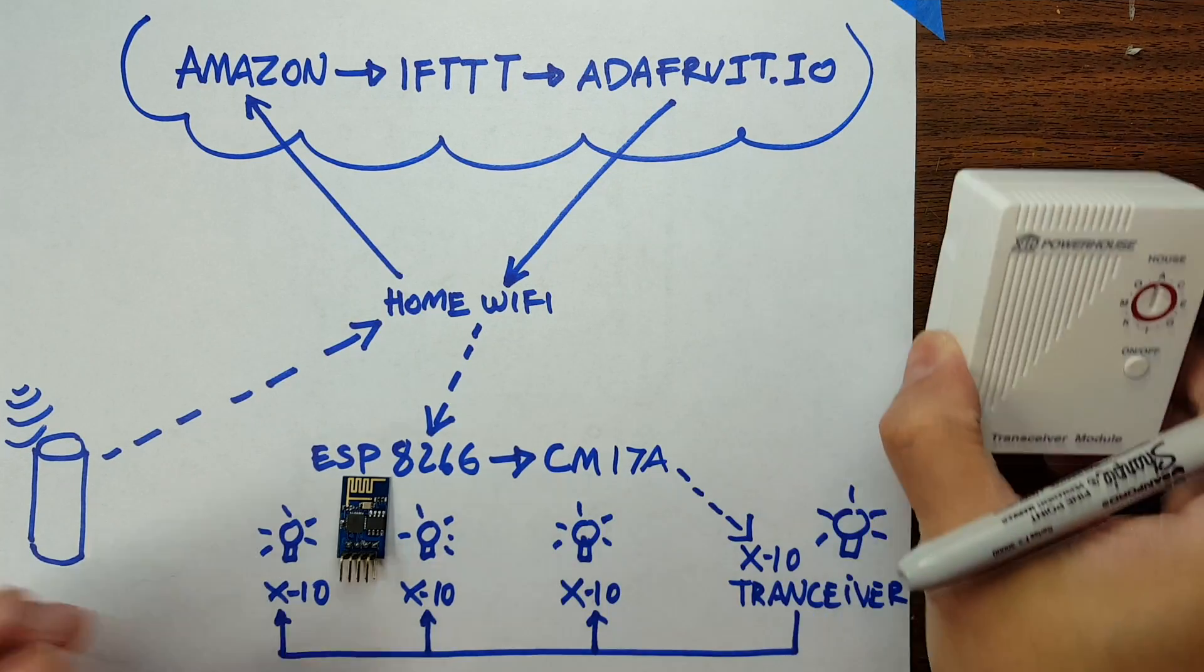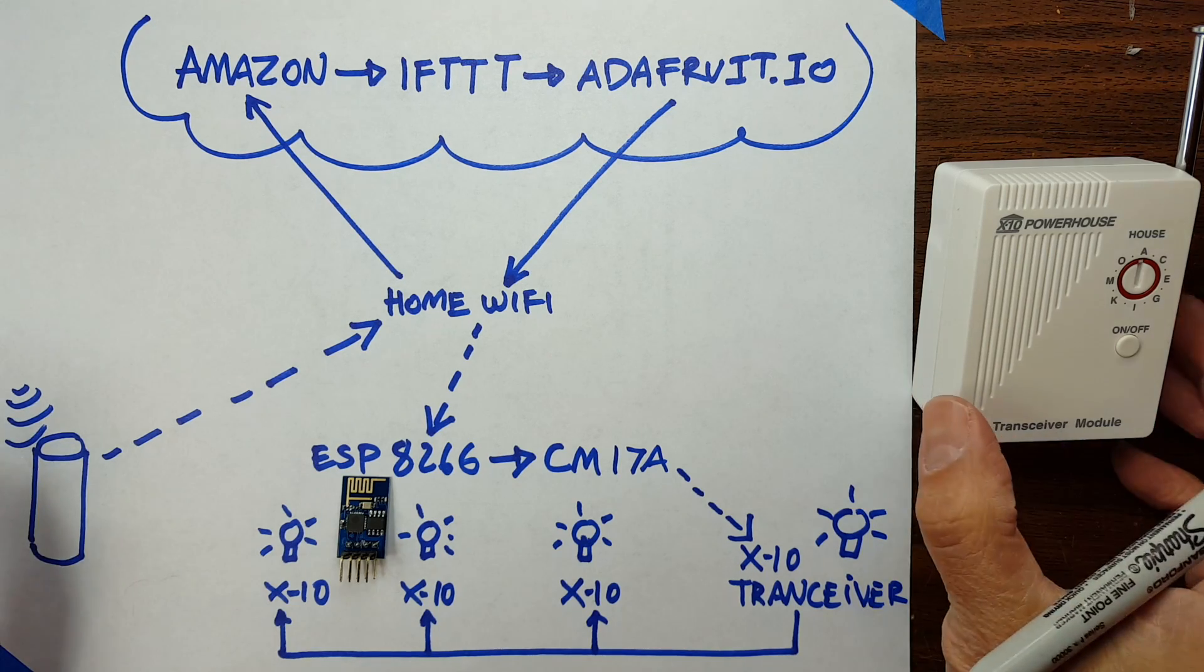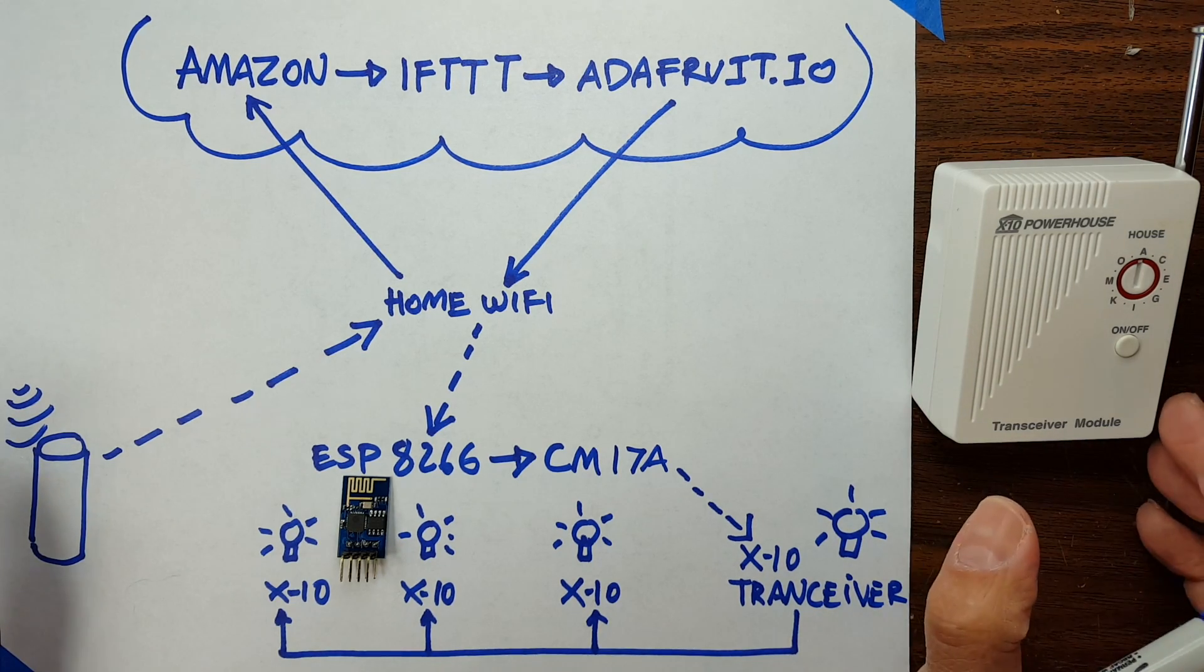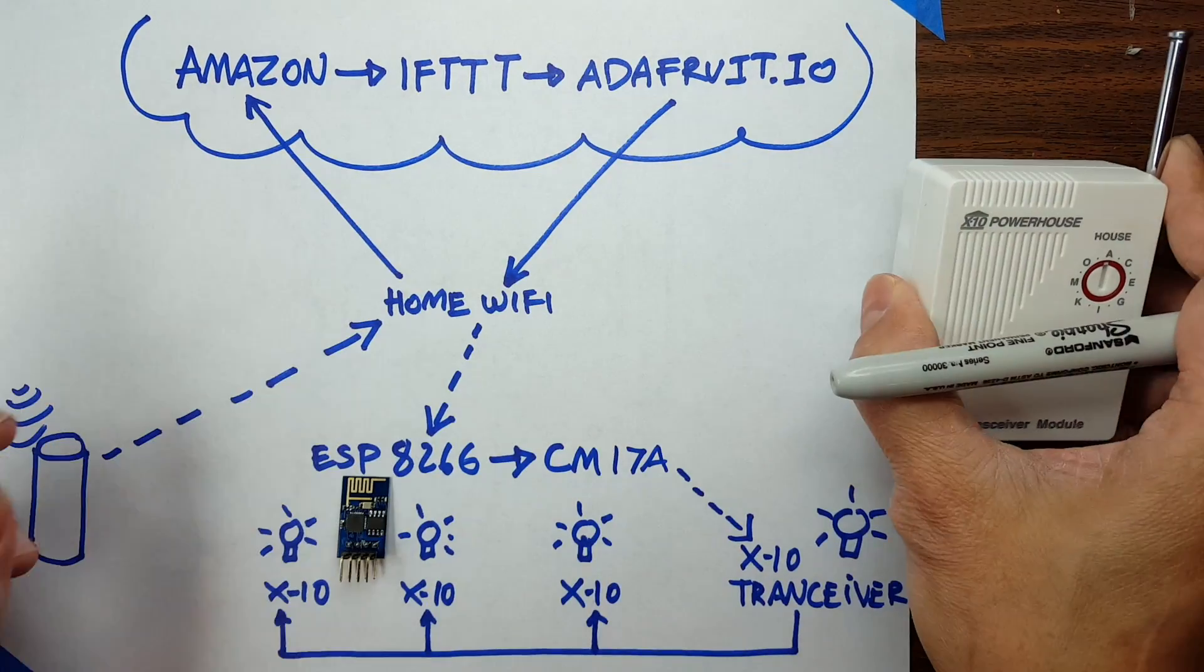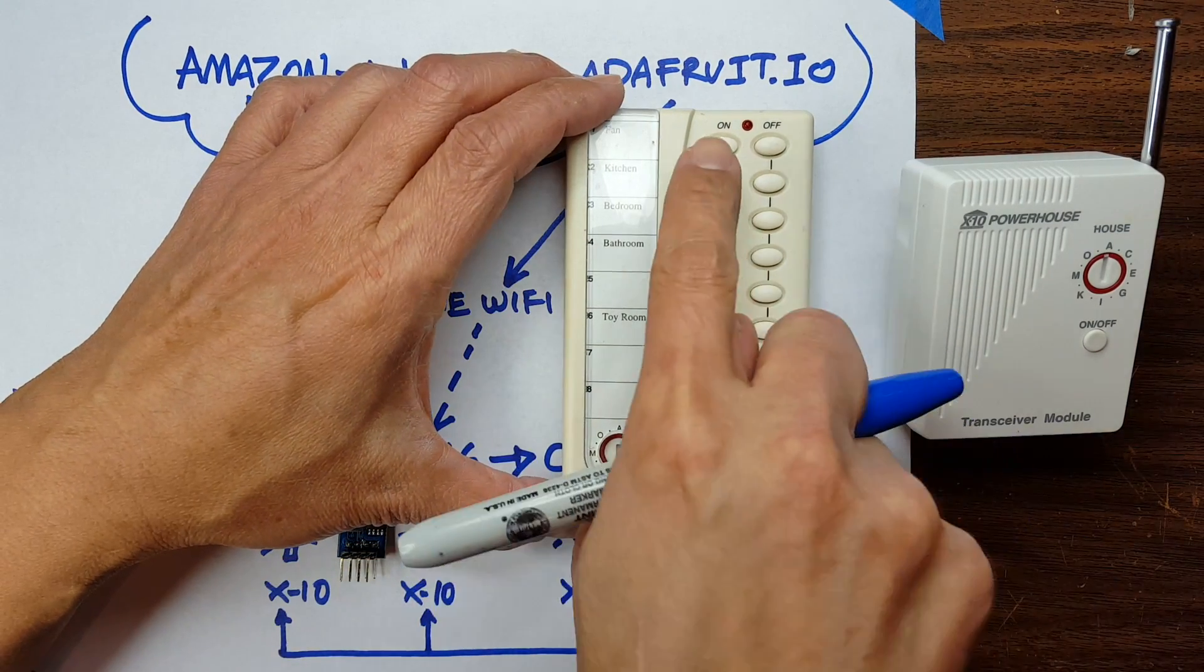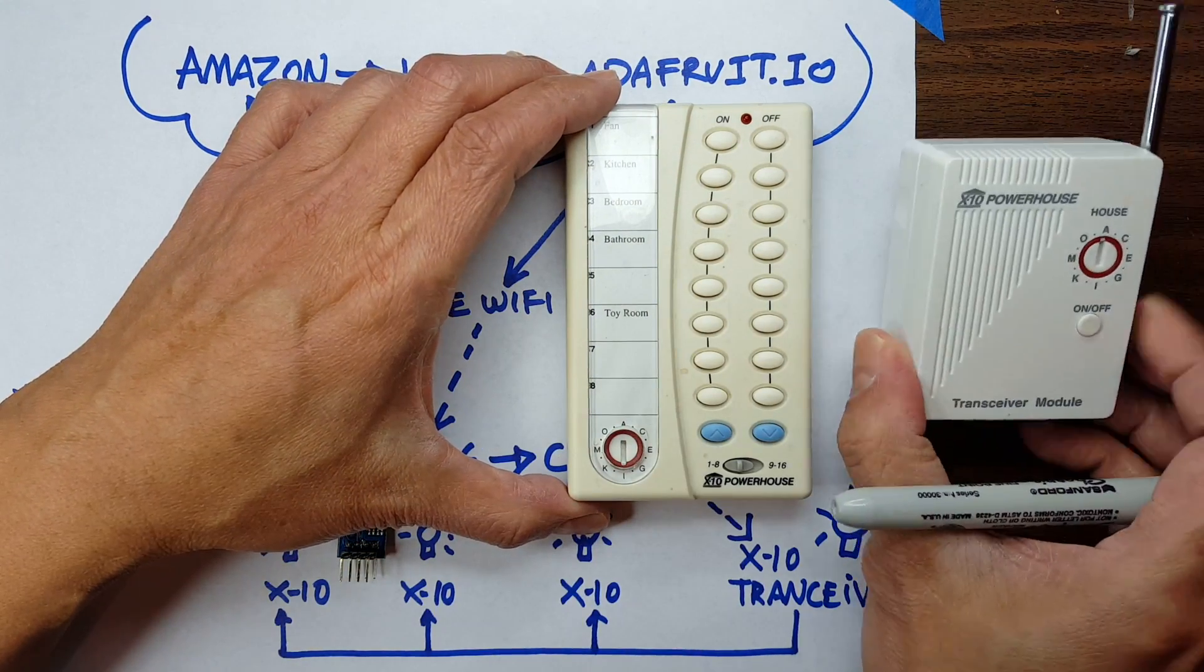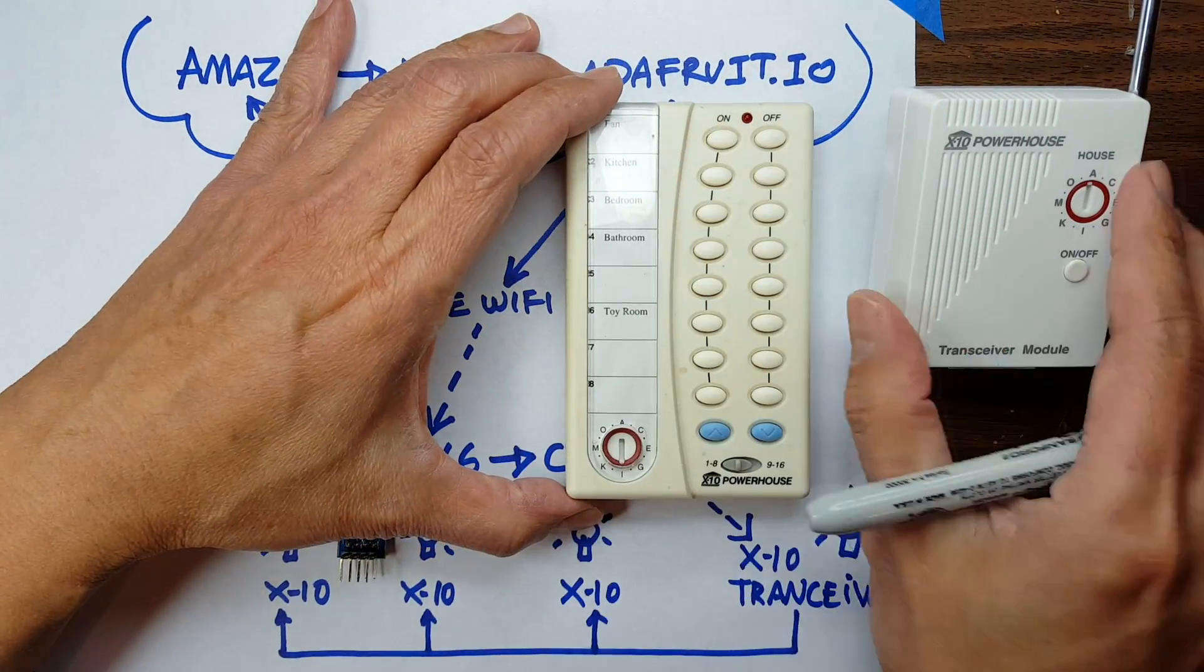I just happened to have this antique X10 home automation system. What it is is something that communicates through the AC power line rather than wirelessly. You plug this onto the wall and there's a transmitter right here that talks to a remote, a battery-powered remote. If you press this button—this happens to be unit number one, there's no button to change the unit—so if you press that it will turn on and off whatever I plug in onto here.